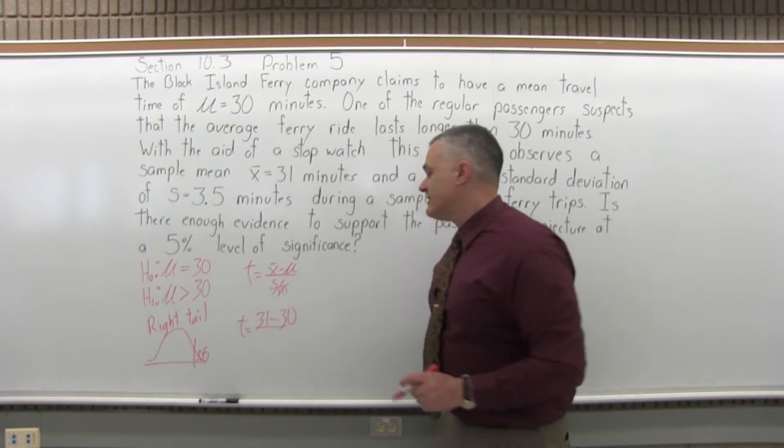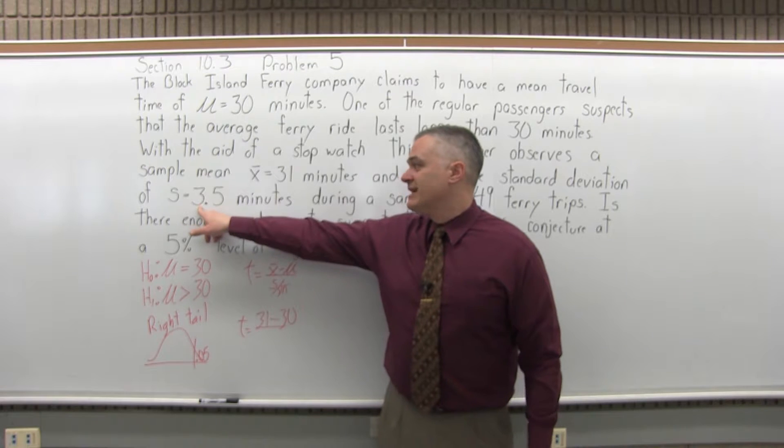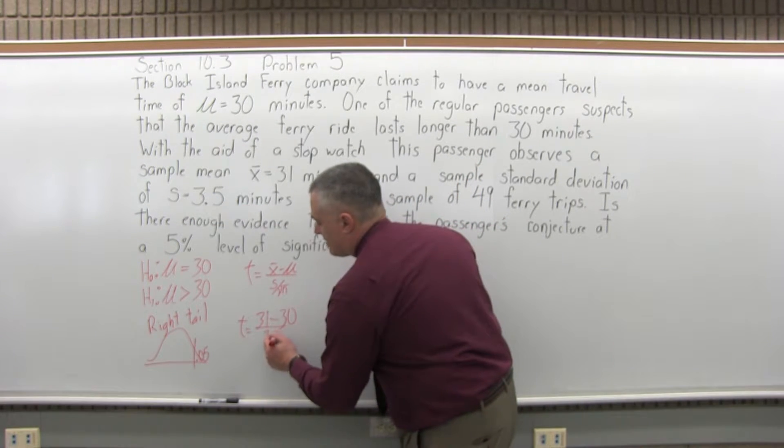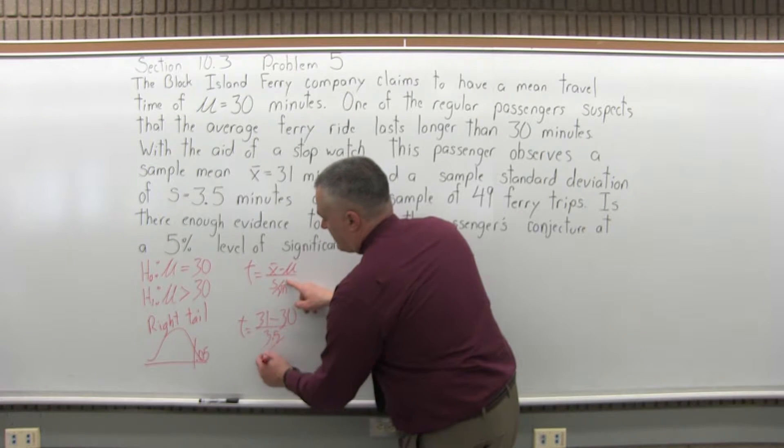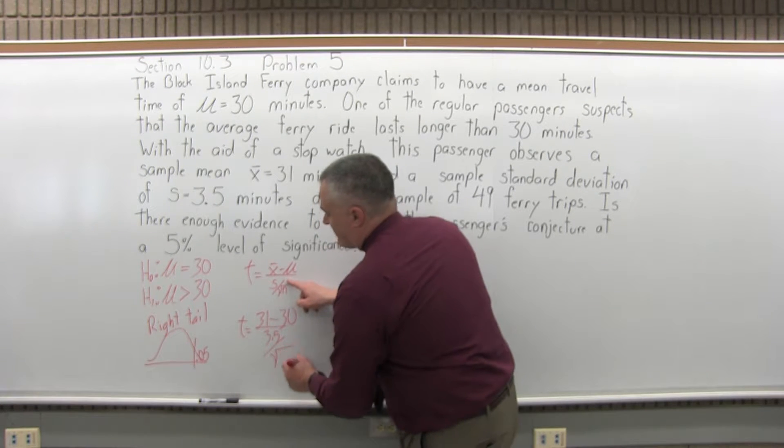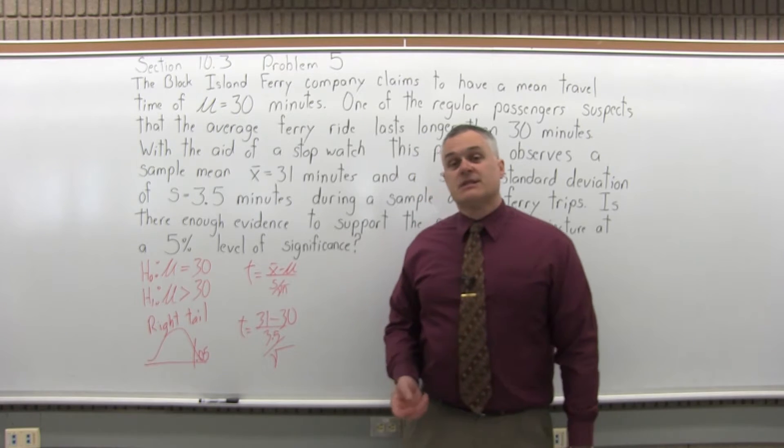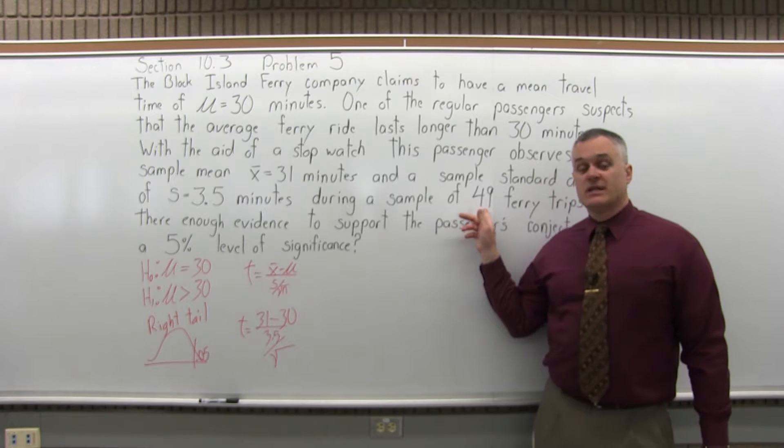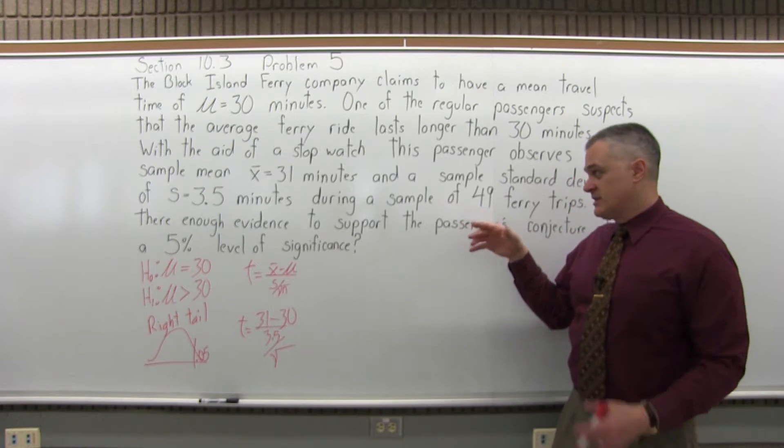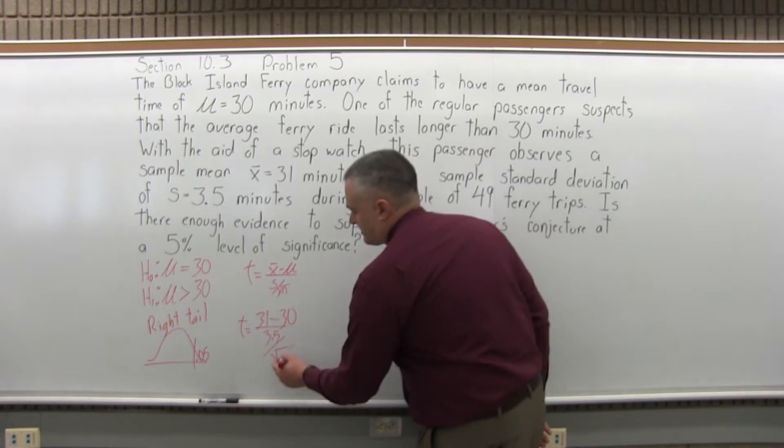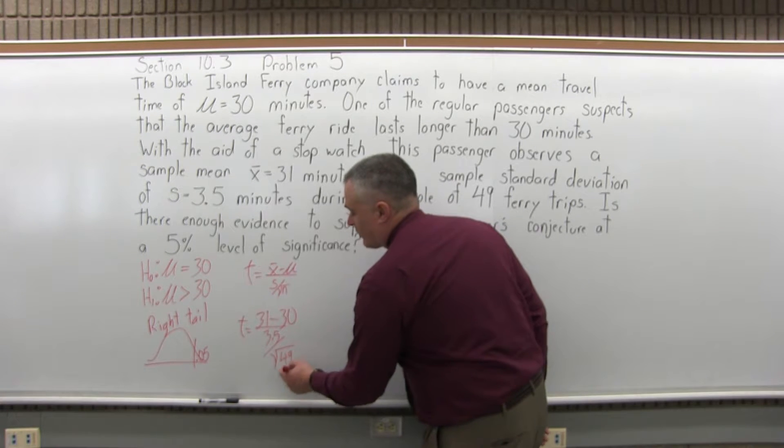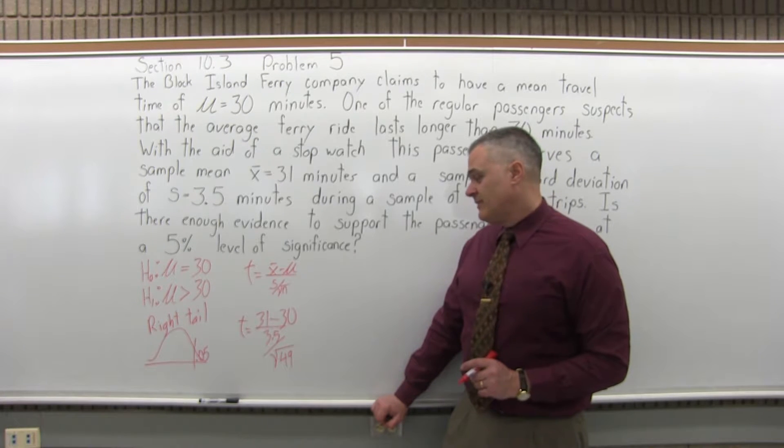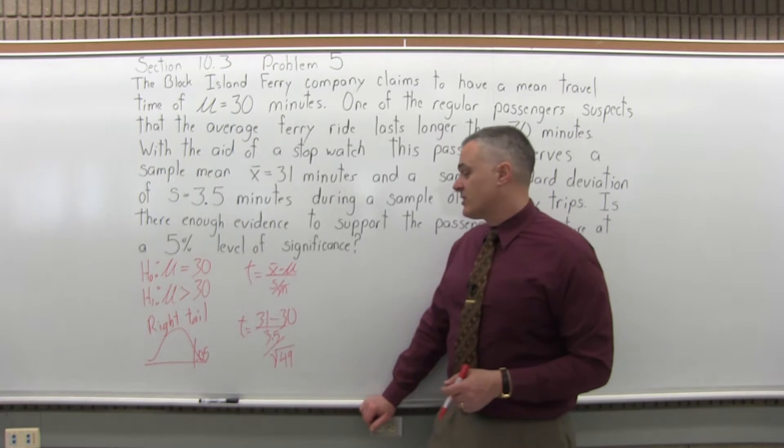Then in the denominator, s, the standard deviation of my sample, is 3.5, and then divide it by square root of n. n is the size of the sample—how many items in the sample? This particular problem has a sample size of 49. There were 49 ferry trips that this passenger kept track of, so 49 items in the sample means the value of n is 49. Don't forget the square root—that's a fairly common mistake. Now the formula is filled in. Let's do all the computation.